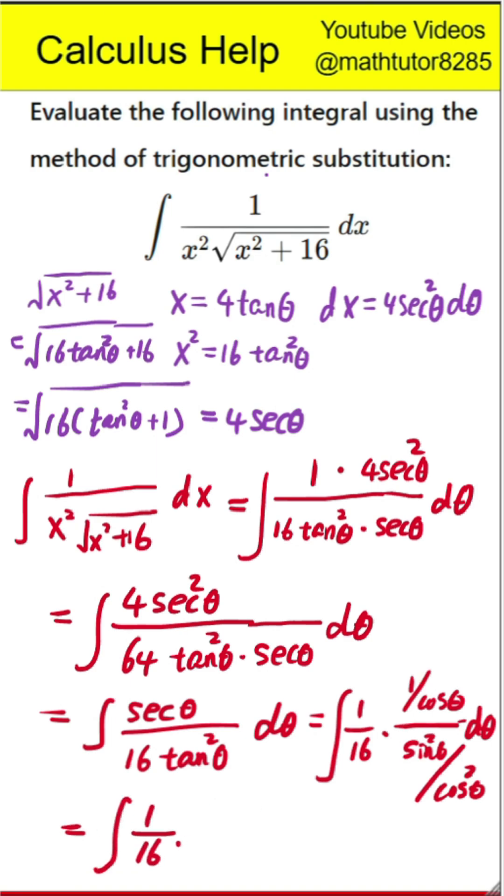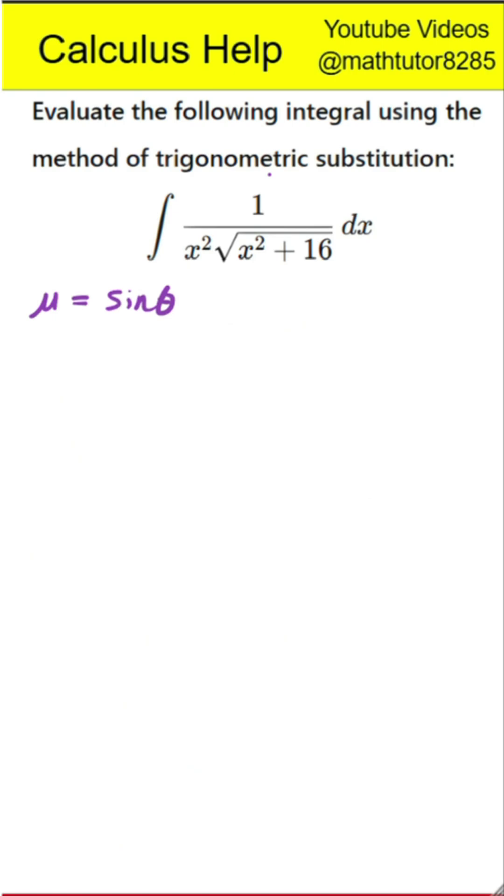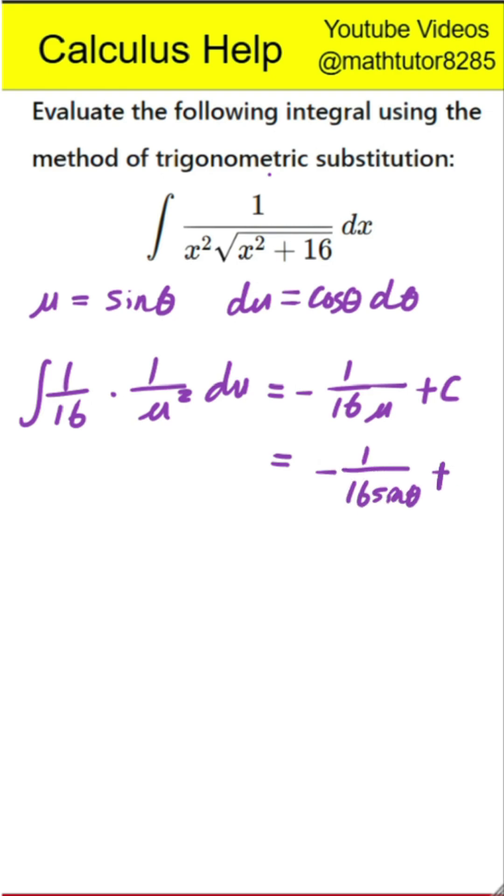Next step is to use substitution. Now let us make a substitution. Let u equal sine theta. Then du is cosine theta d theta. That makes the integral become 1 over 16 times the integral of 1 divided by u squared du. Integrating 1 over u squared gives negative 1 over u. So we now have negative 1 divided by 16 times sine theta plus the constant of integration.